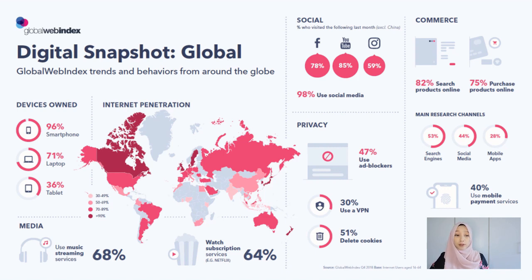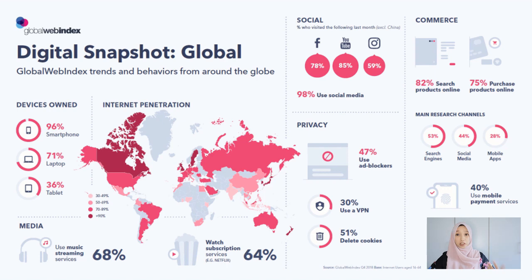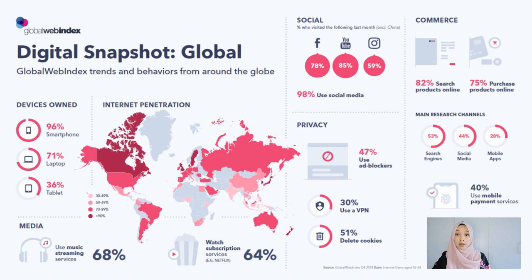If you see the infographic provided by Global Web Index, 96% around the world are using smartphones, 71% are using laptops. Smartphones connect you with online channels, digital channels and also social media channels. You can see that 44% are using social media as a main research channel, 98% are using social media overall. Around 78% are using Facebook, 85% using YouTube, and 59% are using Instagram.